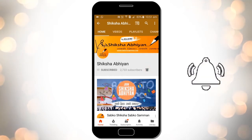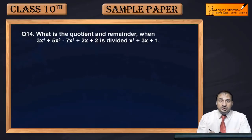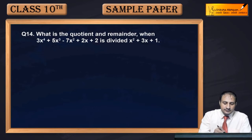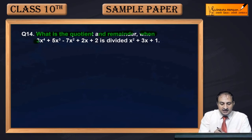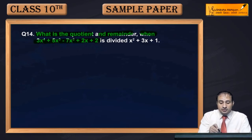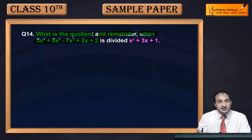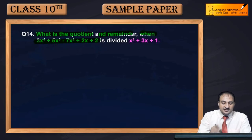Question 14: What is the quotient and remainder when 3x⁴ + 5x³ - 7x² + 2x + 2 is divided by x² + 3x + 1? This will be solved using the long division process.